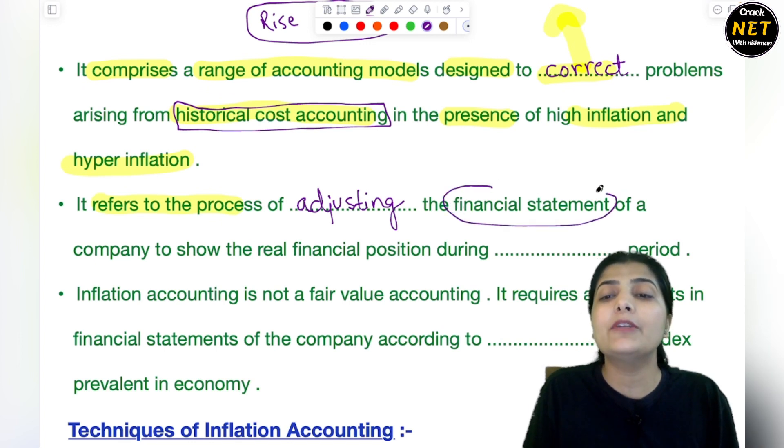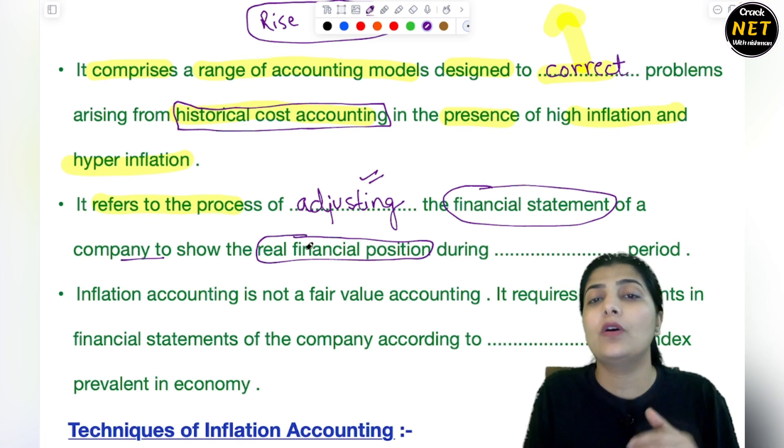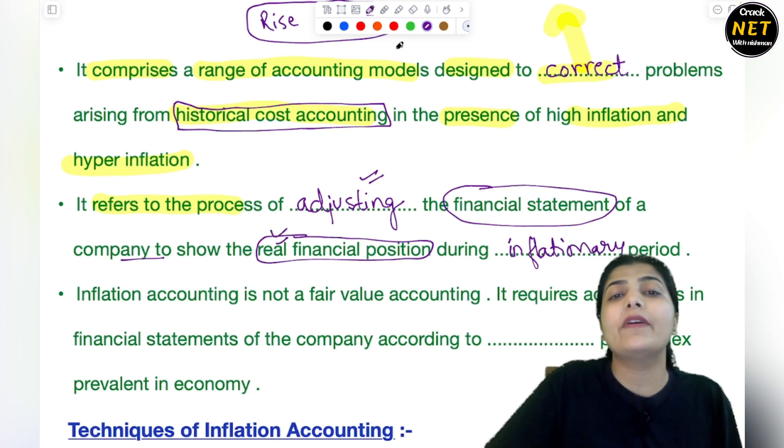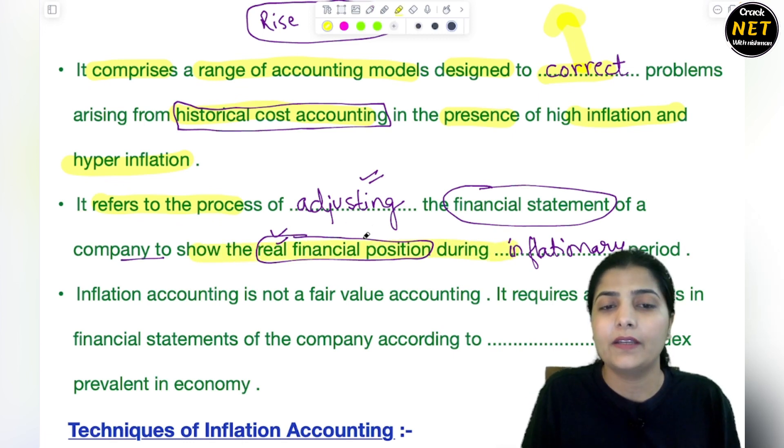Inflation accounting adjusts these financial statements of the company to show the real financial position. If we look at today's time period, where does our company, our financial institution stand during an inflationary period? When inflation increases, what is the real position of our business, our company during the inflationary period? That is shown by the method of inflation accounting.